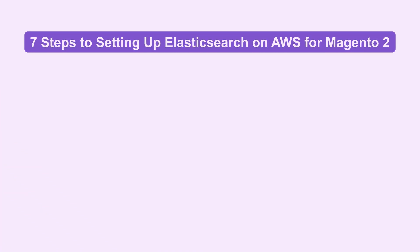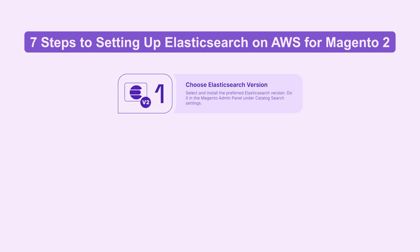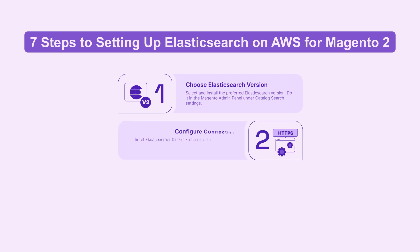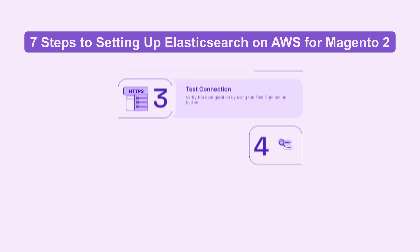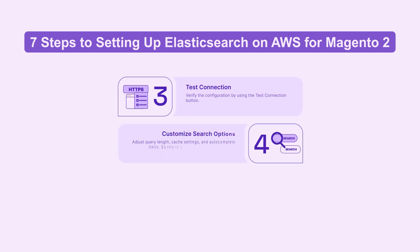Let's move on to seven steps to setting up Elasticsearch. Select and install the preferred version in the Magento Admin panel under Catalog Search Settings. Input the server hostname, port, and index prefix, and enable HTTP authentication if needed. Use the Test Connection button to verify the configuration. Adjust query length, cache settings, and autocomplete limits for optimized search functionality.